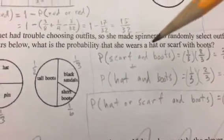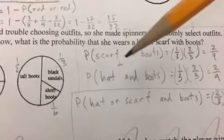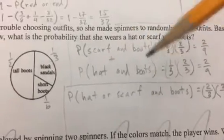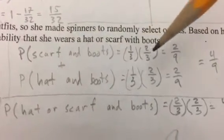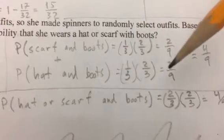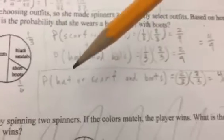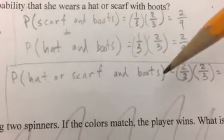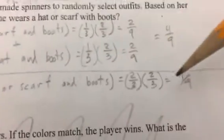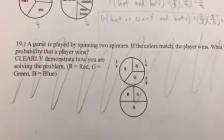The last problem on this page is about the hats and scarves and boots. The probability that she wears a hat or a scarf with boots—that's scarf and boots plus hat and boots. So all of these different probabilities, these are all intersections of those two. Scarf and boots is one-third times two-thirds, which is two-ninths. Same thing with the hat and boots, same probabilities, so that's two-ninths. You add them up and you get four over nine. You can also think of it this way: a hat or scarf and boots. The probability of a hat or a scarf according to the spinner is two-thirds, so two-thirds times the probability of boots, which is also two-thirds. So it's two-thirds times two-thirds—four over nine.